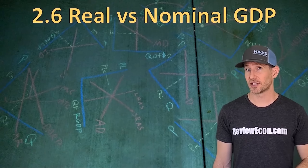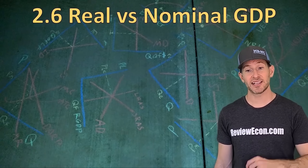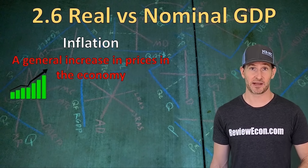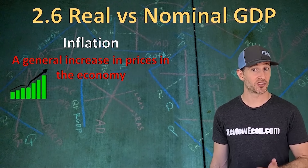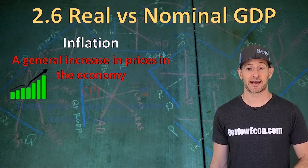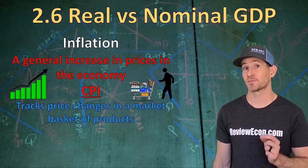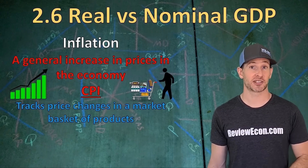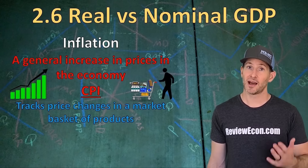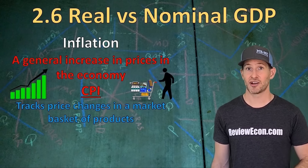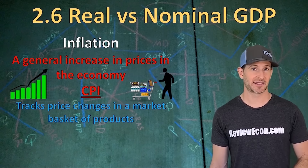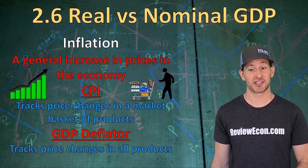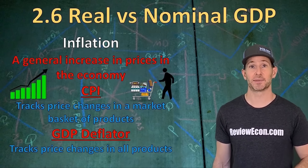The next economic indicator we're going to look at is inflation — a general increase in prices throughout the entire economy. One way of tracking inflation is through the consumer price index, which tracks price changes in a market basket of products typically purchased by an urban household. The other method you need to know for the AP Macroeconomics exam is the GDP deflator, which tracks price changes for all products within an economy.